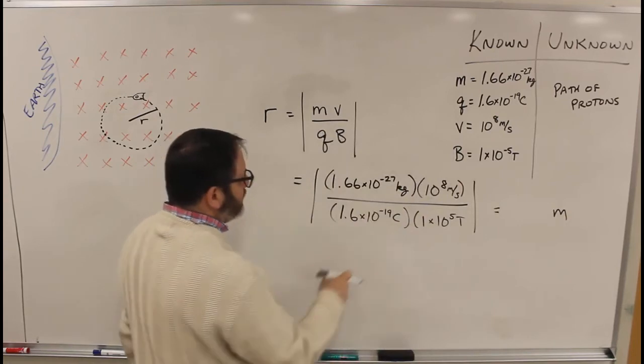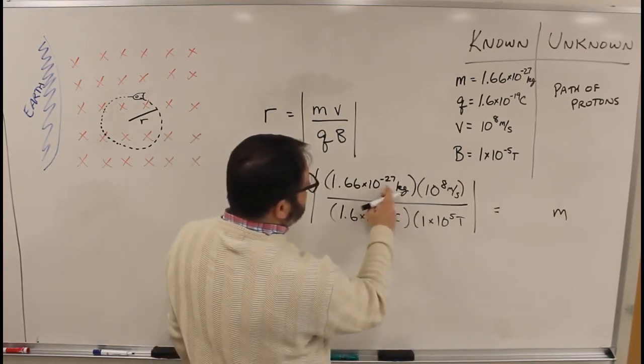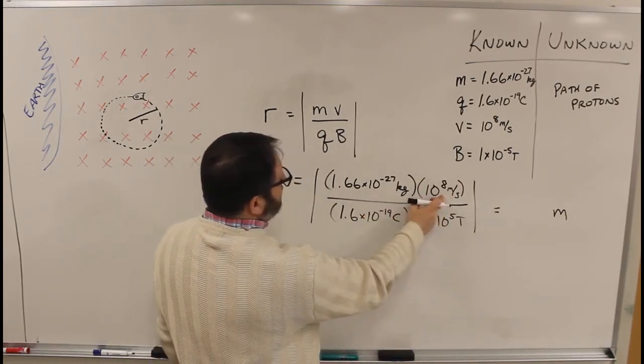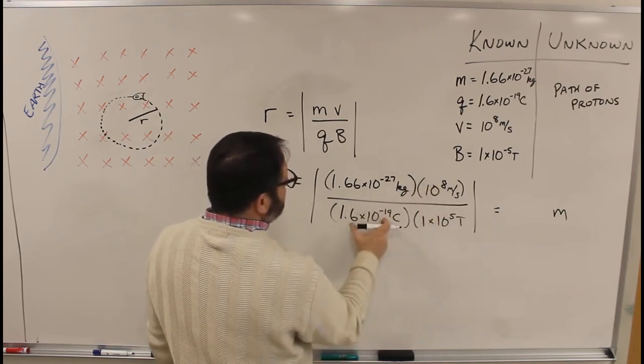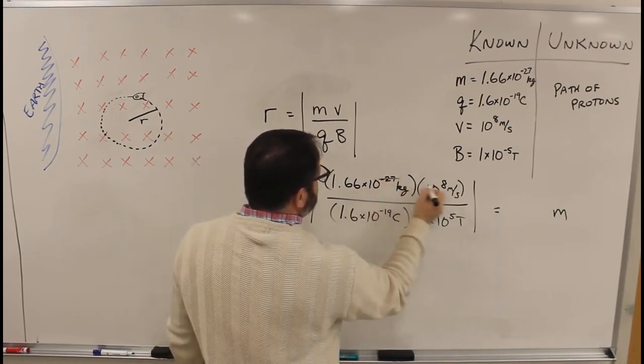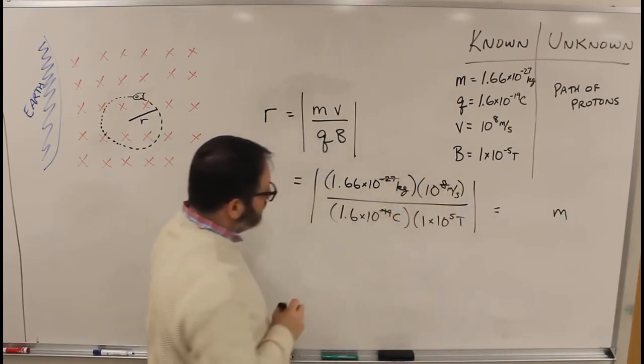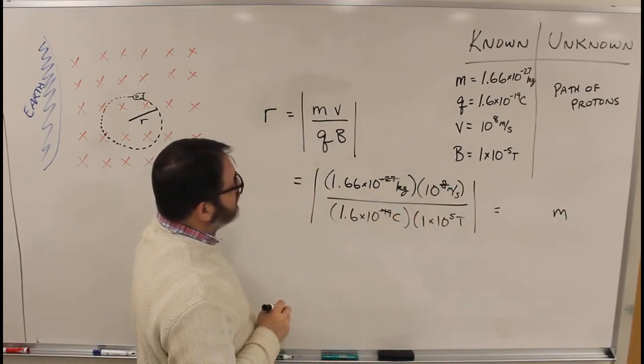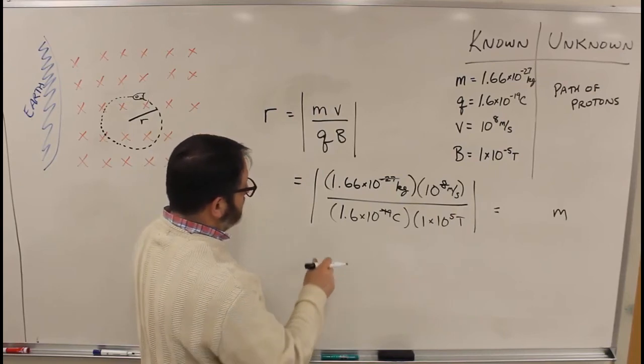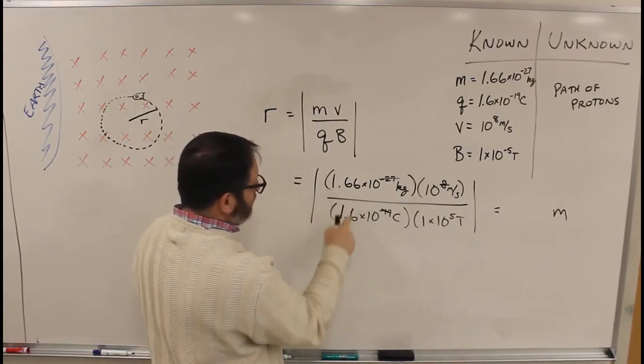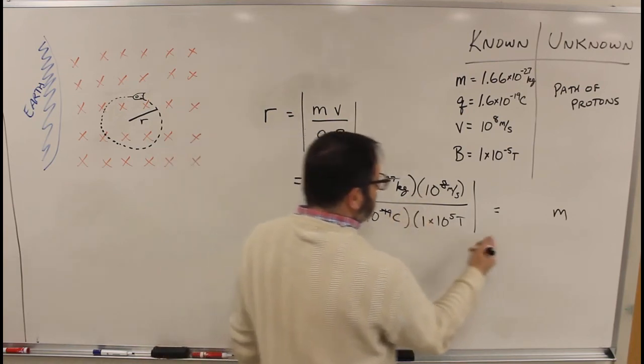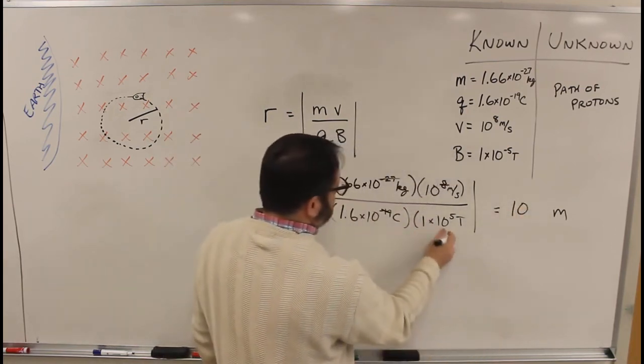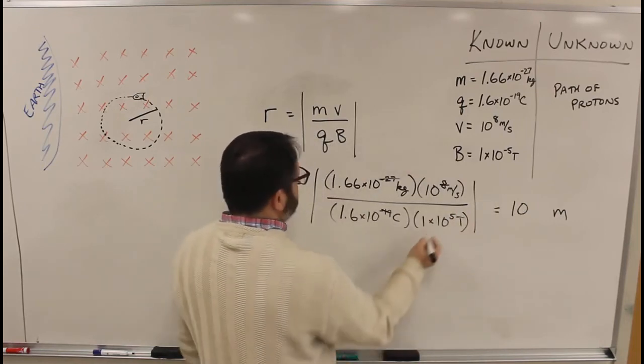I've got 10 to the minus 27 times 10 to the 8th. That's 10 to the minus 19. So 10 to the minus 19 over 10 to the minus 19. Those actually all go away. And we get—this is basically 1.6 over 1.6. That's about 1.